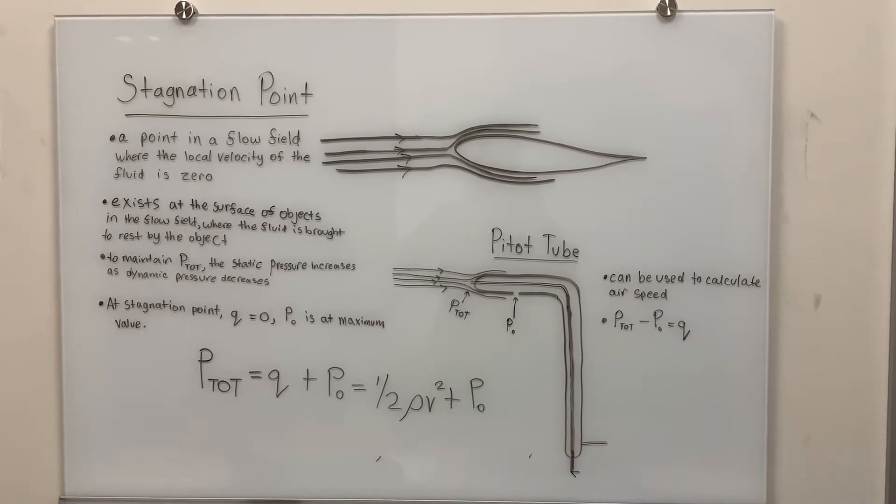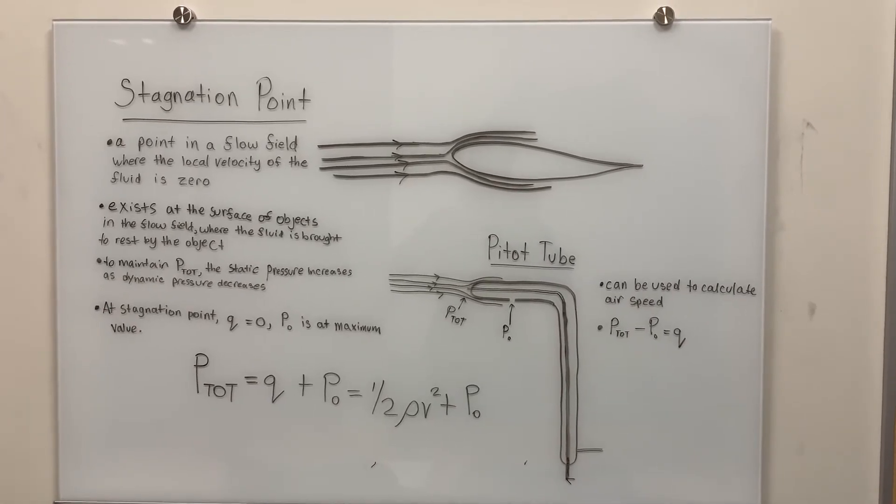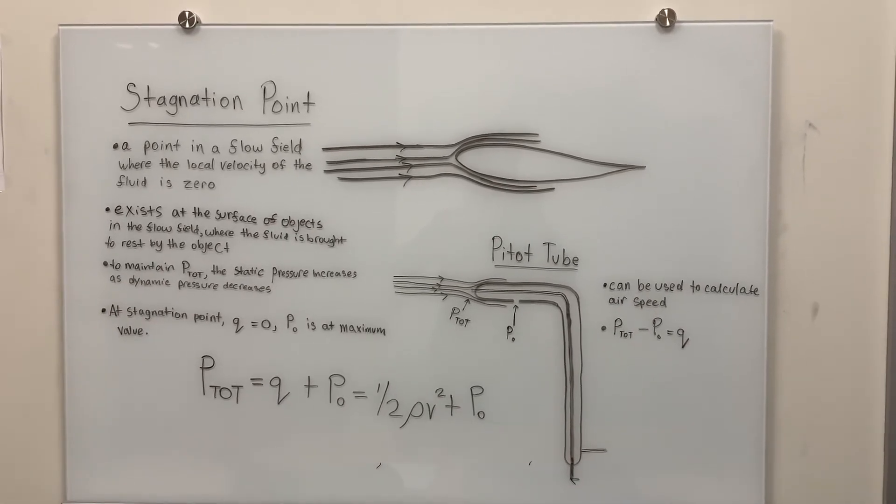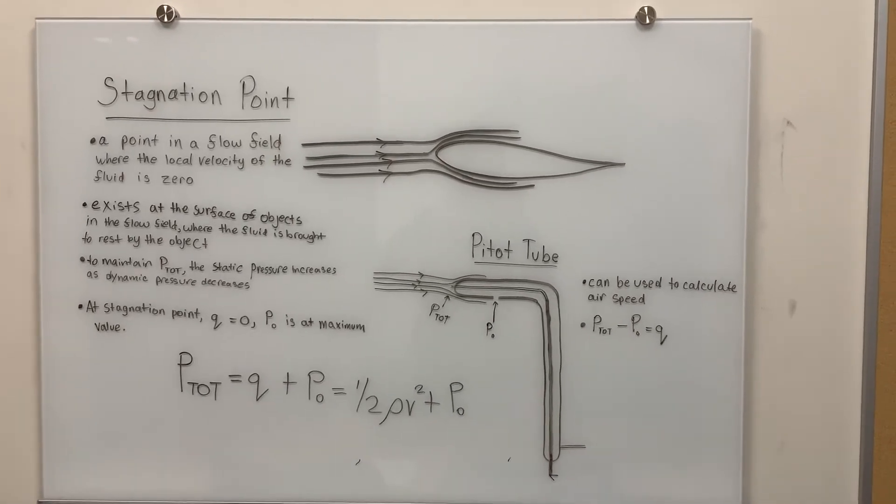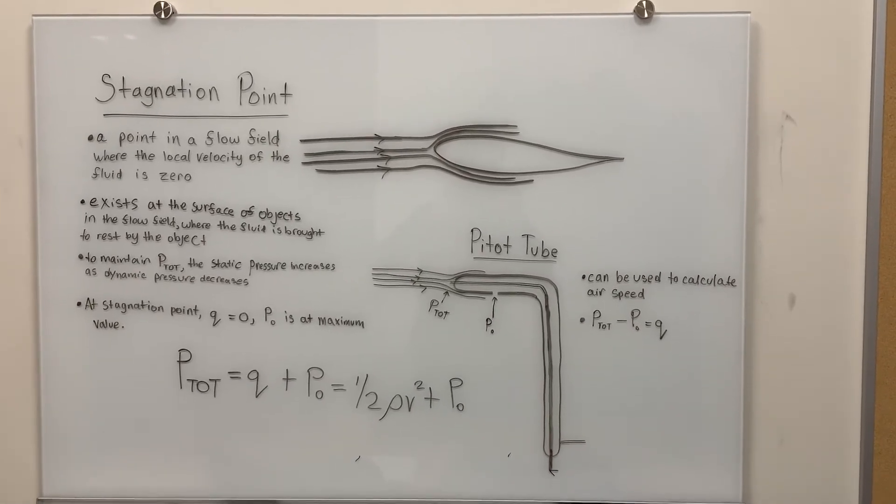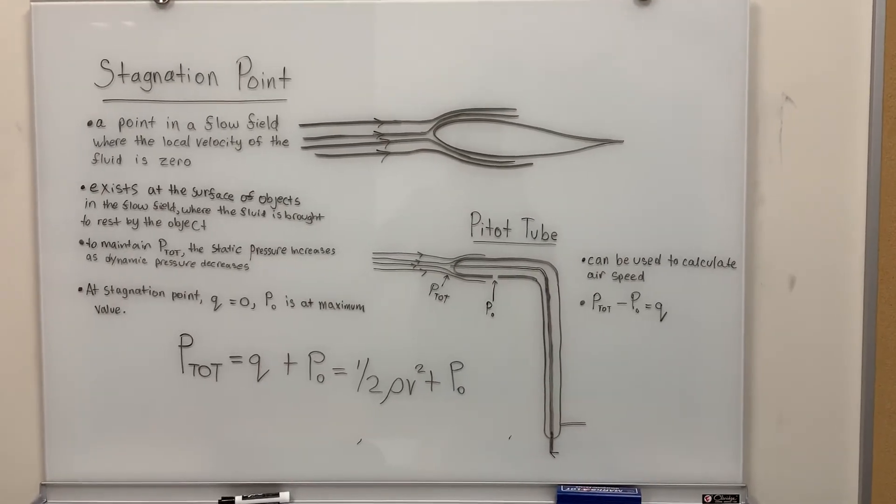By placing the head of the pitot tube into the incoming air flow, total pressure is measured and static pressure is measured. The difference of these can be used to find the dynamic pressure.